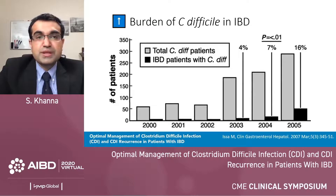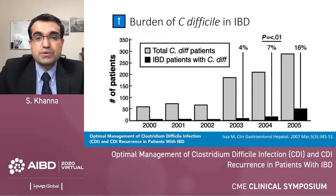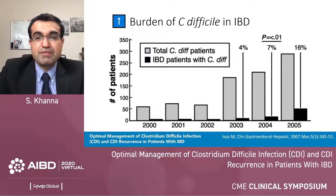Studies have shown that there is an overall increasing burden of C. difficile in inflammatory bowel disease patients. This study looked at the percentage of patients having IBD and C. diff infection concomitantly. The total number of C. diff patients seen were increasing, but the fraction who had IBD in addition to C. diff also increased from 4% in 2003 to 16% in 2005 — a four-fold increase.